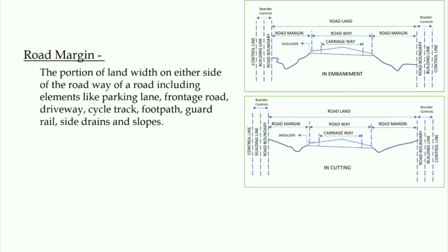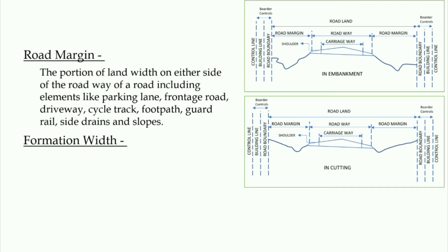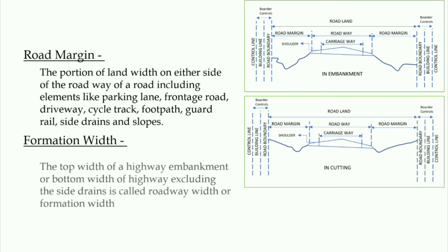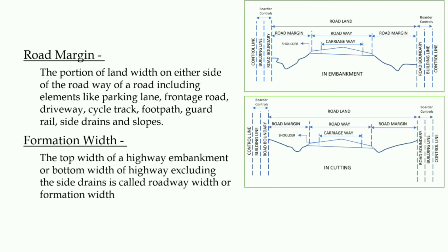Next is road margin. The portion of land width on either side of the roadway of a road, including elements like parking lane, frontage road, driveway, cycle track, footpath, guard rail, side drains, and slopes.